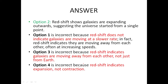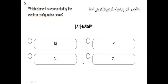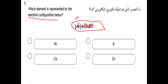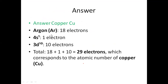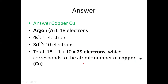The next question asks which element represents this electronic configuration. We have Argon with 18 electrons, plus 10 electrons, plus 1 electron — giving a total of 29 electrons. 29 is the atomic number of copper. So the answer is copper.